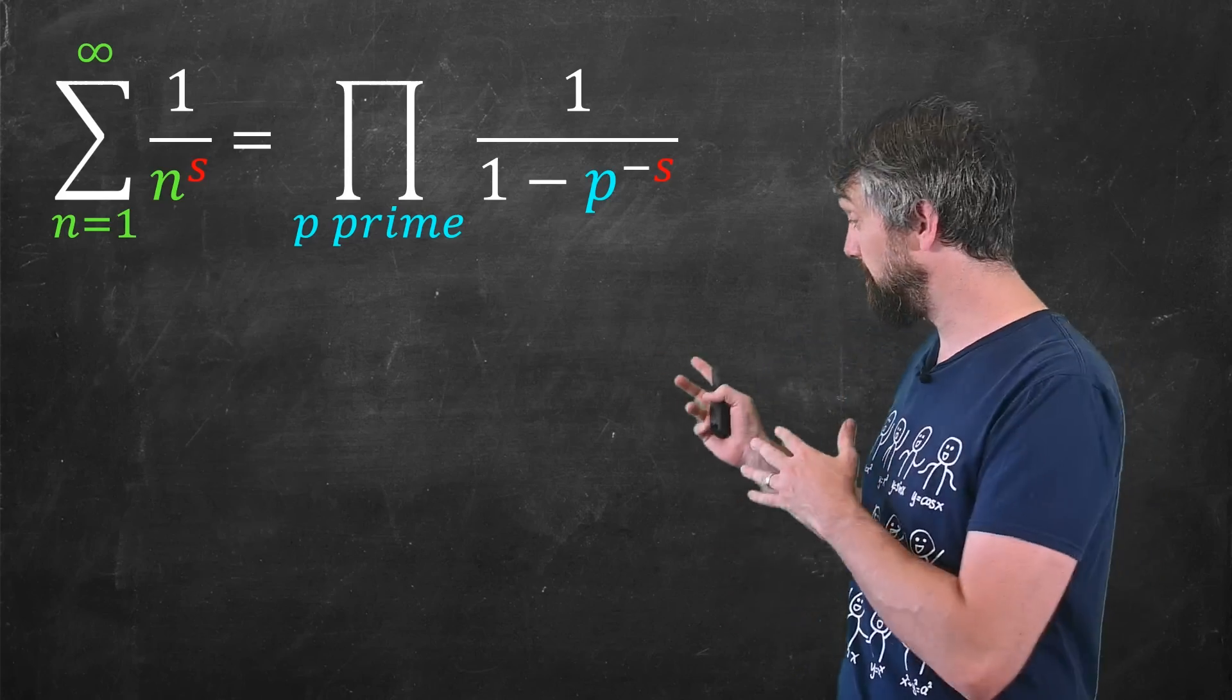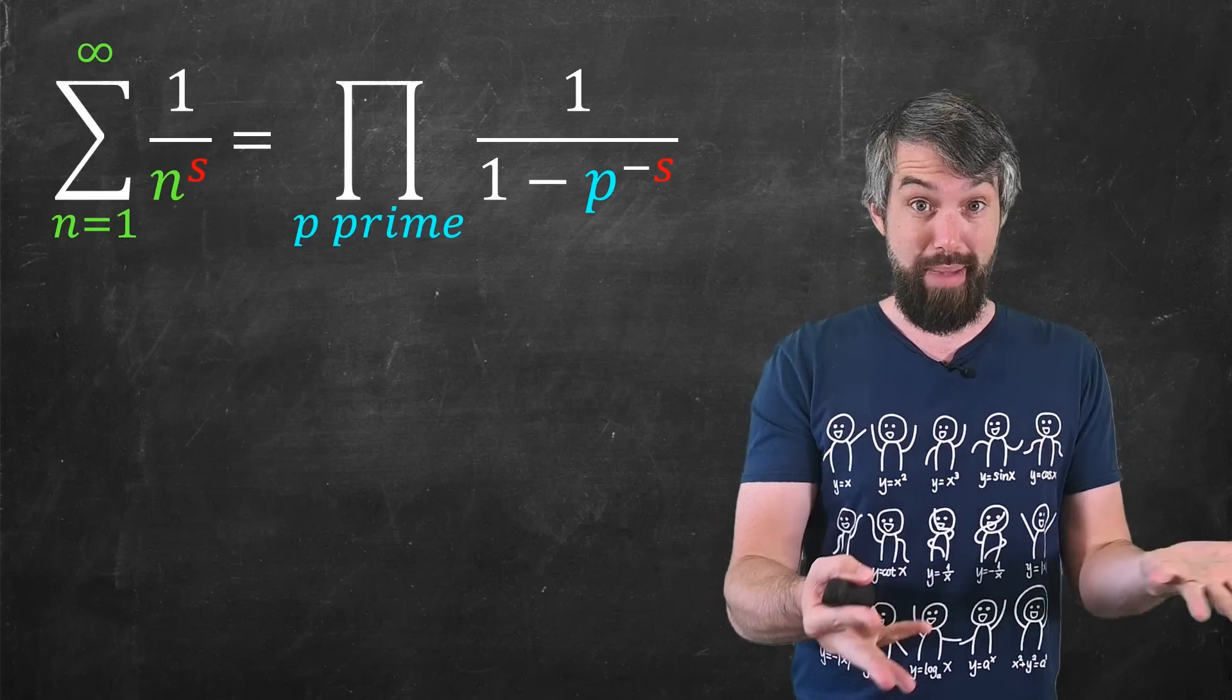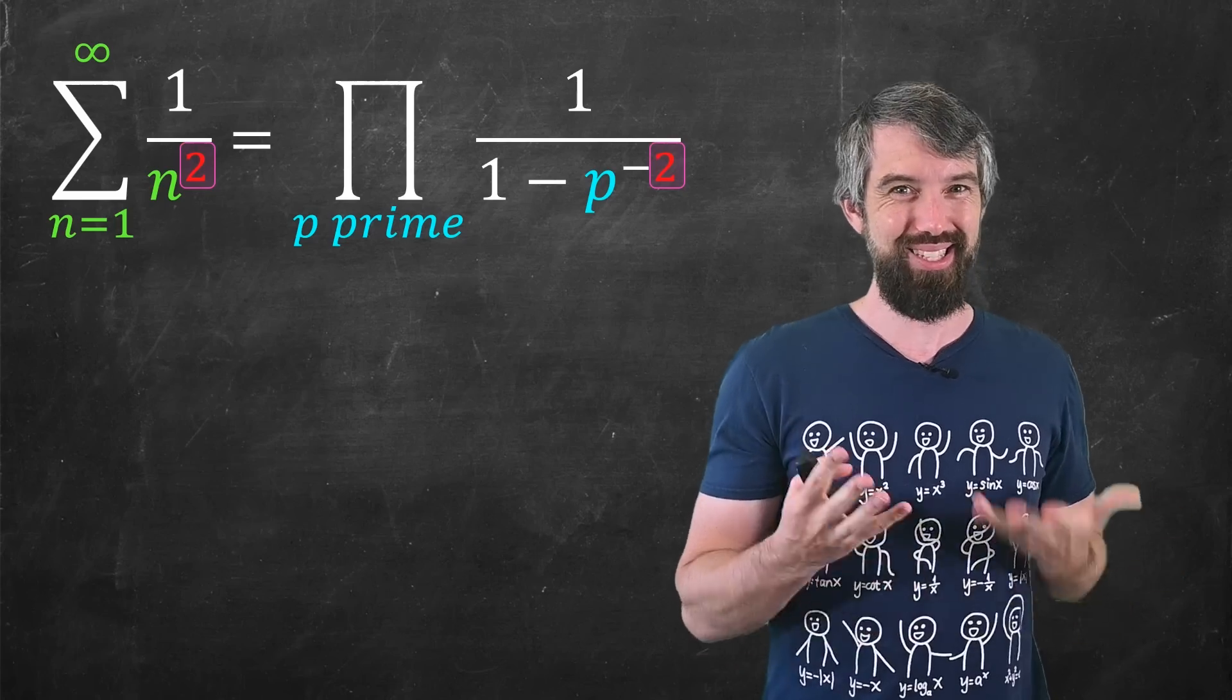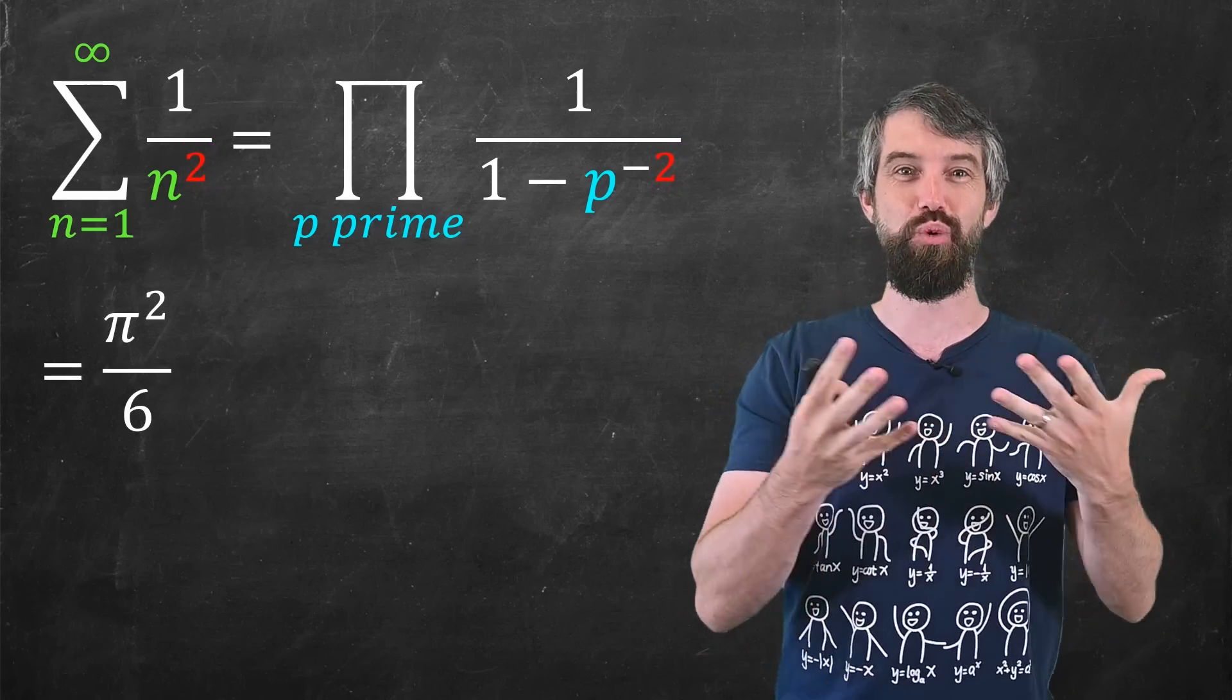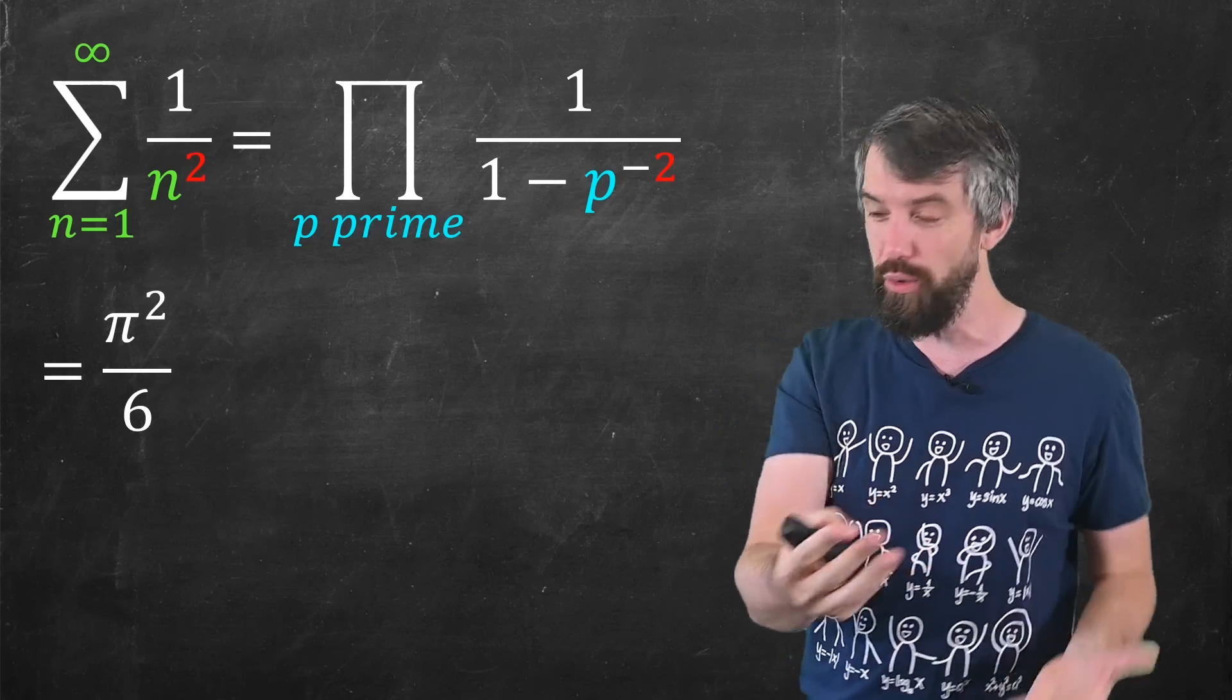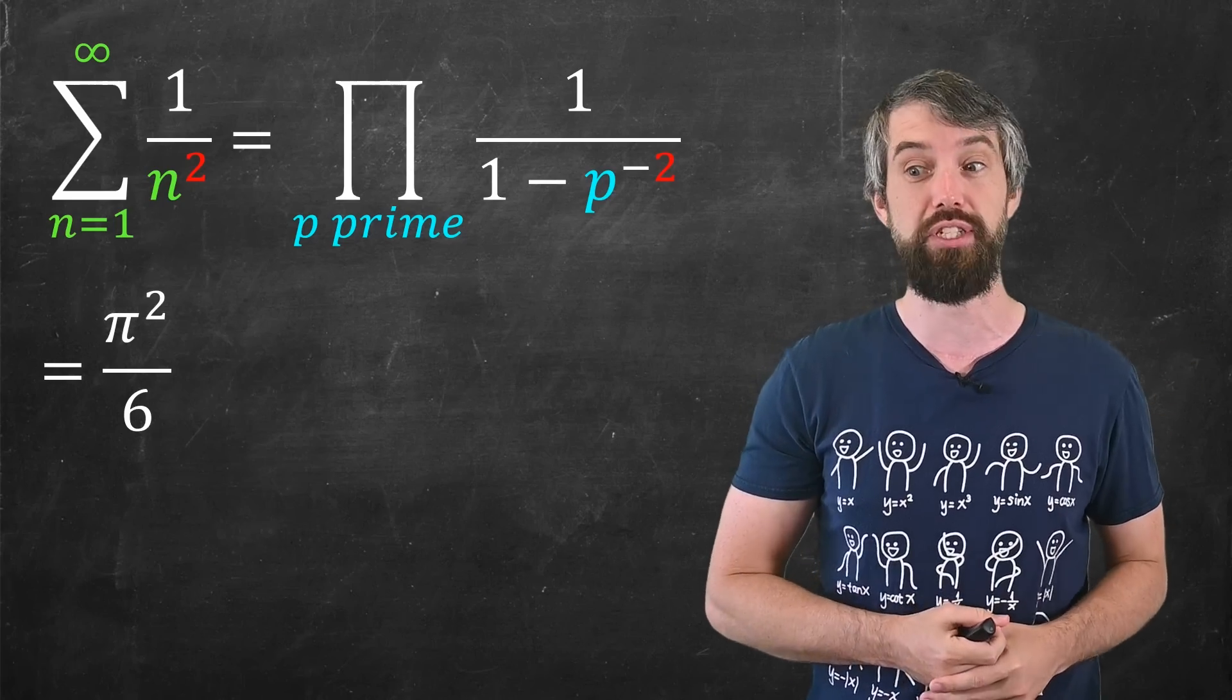Now, it's worth noting that this equation has a parameter s on both sides. s can be many numbers. Like, for example, I could plug in the specific value of s equal to 2. And when I do it, this equation actually adds up to something. It converges to the number pi squared over 6. So for any of you who think that any candidate for a beautiful math equation better have a pi in it, well, okay, we have a pi in this one.